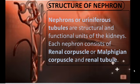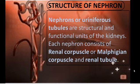We are going to start the continuation of our human excretory system - the structure of the nephron. Nephrons are otherwise called uriniferous tubules and are the structural and functional unit of the kidney. Just as the human cell is the structural and functional unit of the whole human body, likewise the nephron is the structural and functional unit of the kidney.